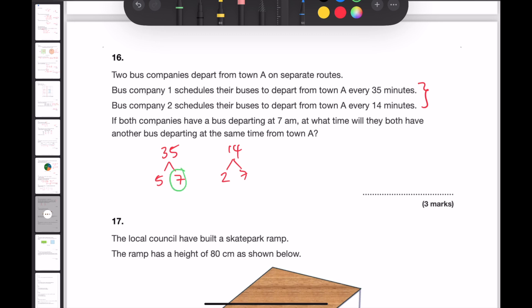Each has a common prime number of 7. So writing the common prime number and multiplying this by each of the other prime numbers in the list will give me the lowest common multiple. 7 times 5 is 35 times by 2 is 70. This means that after 70 minutes, each company will then have another bus departing at the same time. 70 minutes is the same as 1 hour and 10 minutes. And adding 1 hour and 10 minutes to 7am means that I've got 8.10am.